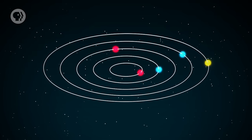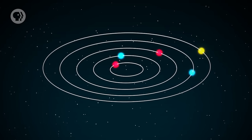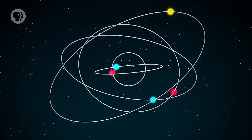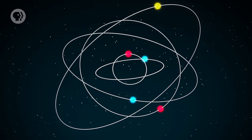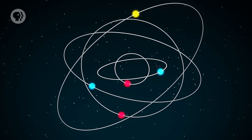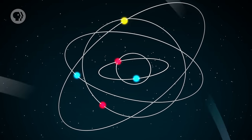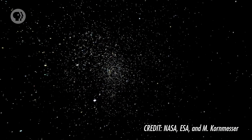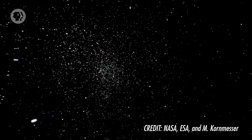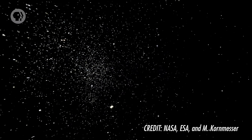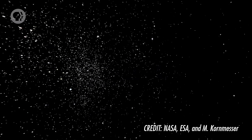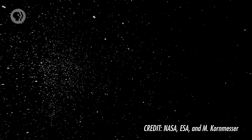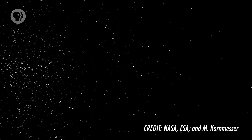The stars don't all orbit in a flat plane like our planets do. Instead, their orbits are tilted in all different directions, more like the way long-period comets are scattered around the Sun. Typically an open cluster is a couple of dozen light-years across, with stars much closer together than in interstellar space. The nearest known star to the Sun is over four light-years away, while stars in an open cluster are typically a fraction of a light-year apart.